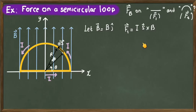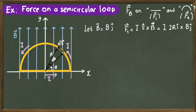We write down the magnetic force F1 on the straight wire using the formula: the current times the length vector S cross product with B, the magnetic field. The vector S is just two times the radius R of the circle, and since the current is in the direction of the positive x axis, we put the unit vector i, so 2R times i is the S vector.